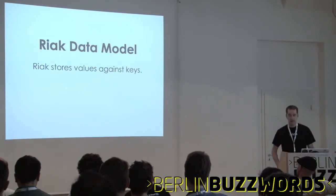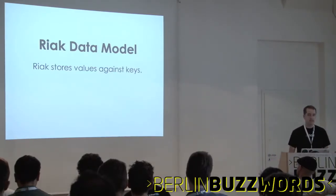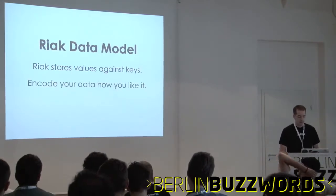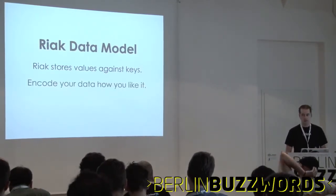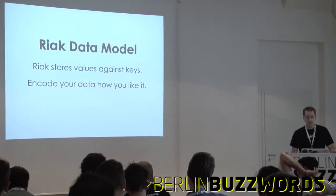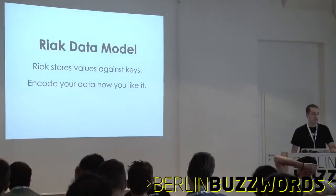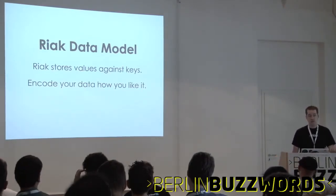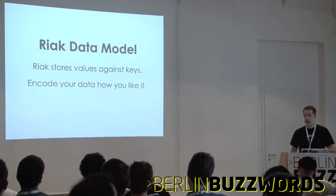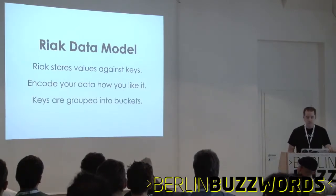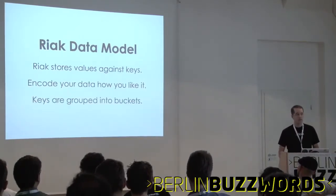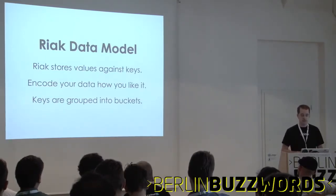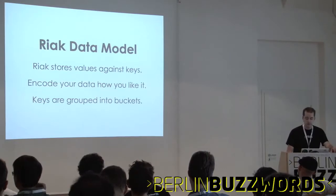The Riak data model: Riak stores values against keys, so you generally need to know the key when looking something up. Unlike some other systems, it lets you encode your data how you'd like, which means you take greater responsibility for marshaling that in and out of your application. It can basically store anything you can give a MIME media type. Keys are grouped into buckets, which are kind of lightweight namespaces — they have no meaning other than to prefix the key, but they're a nice way to organize your data.